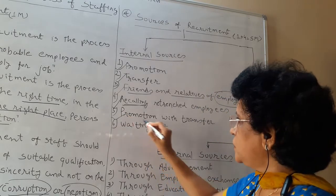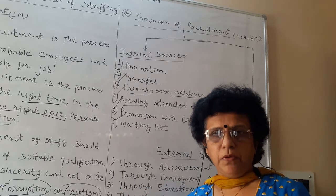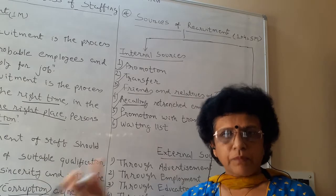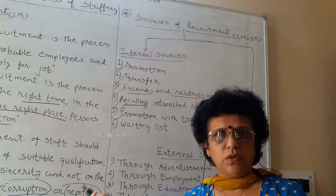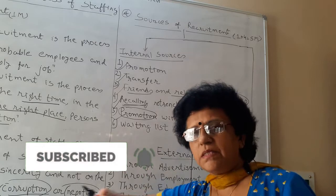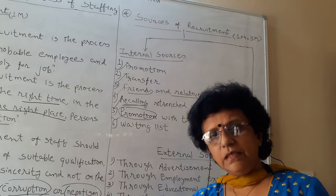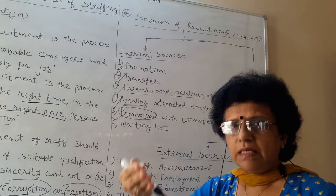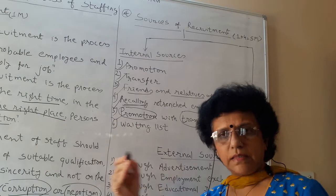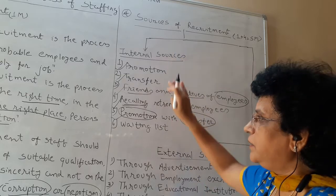The next internal source is promotion with transfer. When your own capable and successful employee can give more justice to the organization in another place, another branch, or another city, you promote that person as an incentive to encourage them to move. It is not easy for any employee to adjust in a new scenario, so you give promotion along with asking them to move from one city to another. This can also satisfy your internal recruitment need.